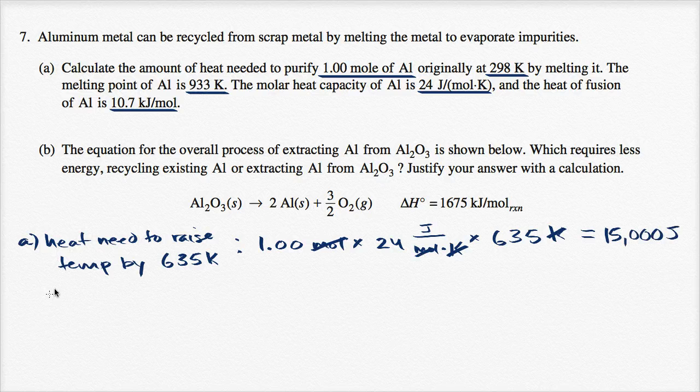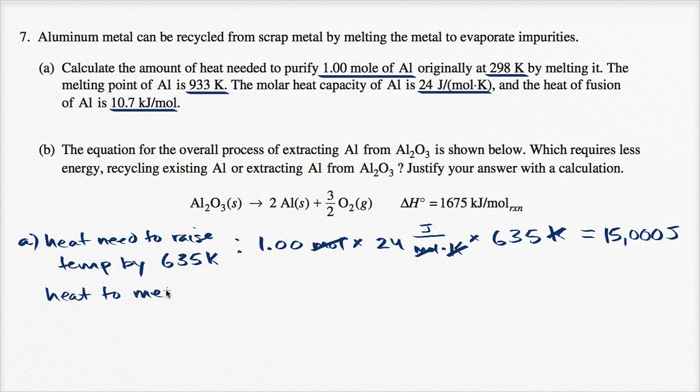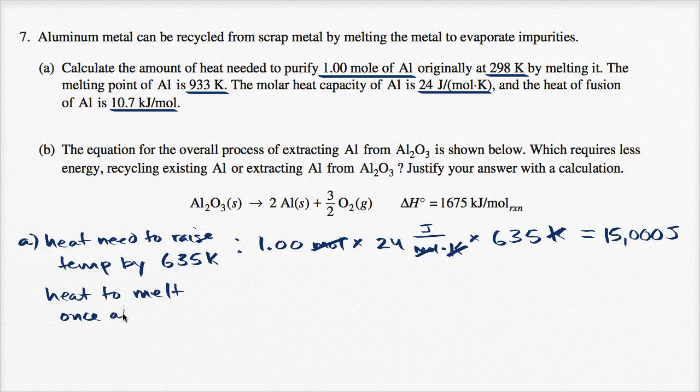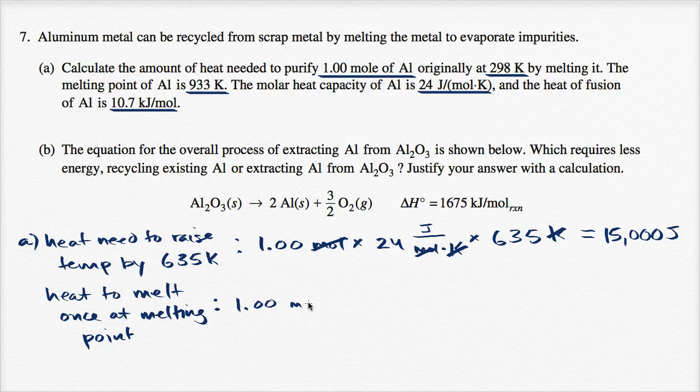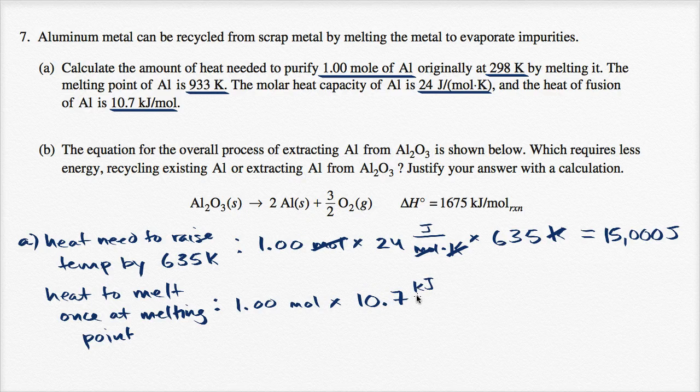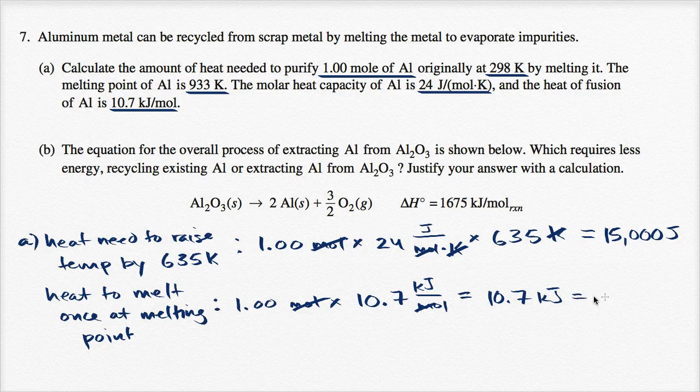And then we have the heat of fusion, heat to melt once at melting point. That is going to be one mole times the heat of fusion, times 10.7 kilojoules per mole. This gives us 10.7 kilojoules, or if we want to write it in joules, 10,700 joules.